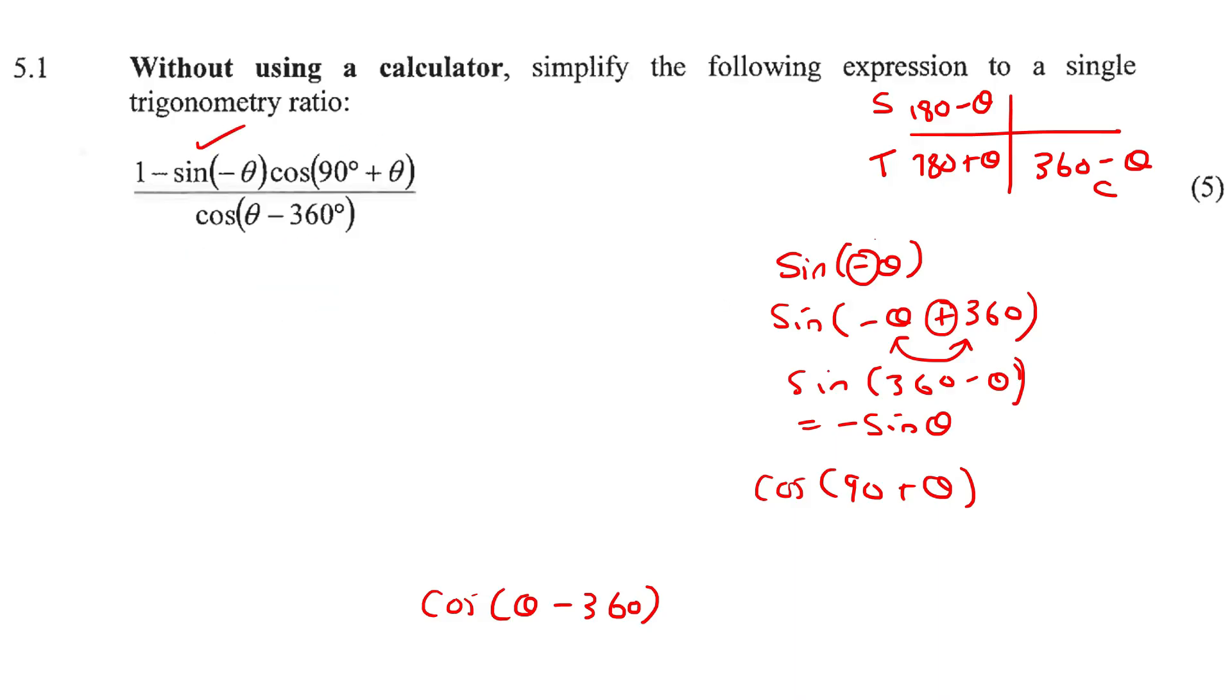Now, here we have a co-function. Remember the co-functions? We've got four of them. We've got this, we've got this, we've got this. They always become the opposite.